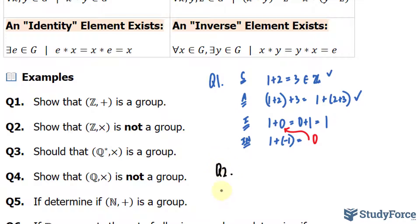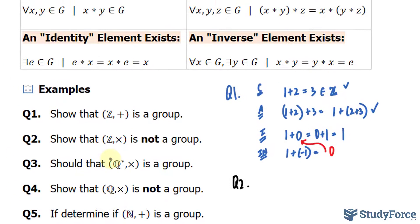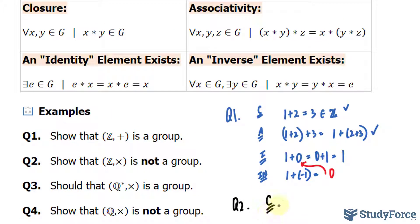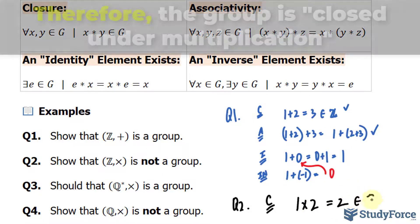Now let's look at question 2. Show that Z with the operation multiplication is not a group. So one of these will fail. We'll start with closure. If I pick two elements within Z, let's say 1 and 2, 1 times 2 gives us 2, and that's also in Z. So that passes.